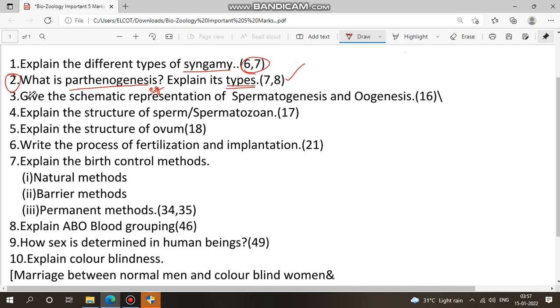So next, third question: give the schematic representation of spermatogenesis and oogenesis, page 16. This is the schematic representation, it is a government question, so you will learn.